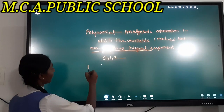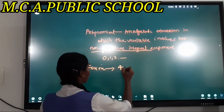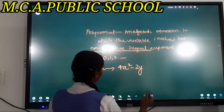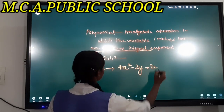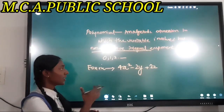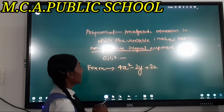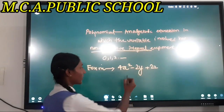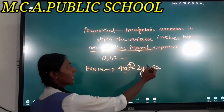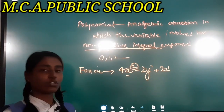Let us take an example. Here, 4x² − 2y + 2z is an example of a polynomial. As per the definition, the variable involved has non-negative integral exponents: the variable x has exponent 2, and the variables y and z each have exponent 1.